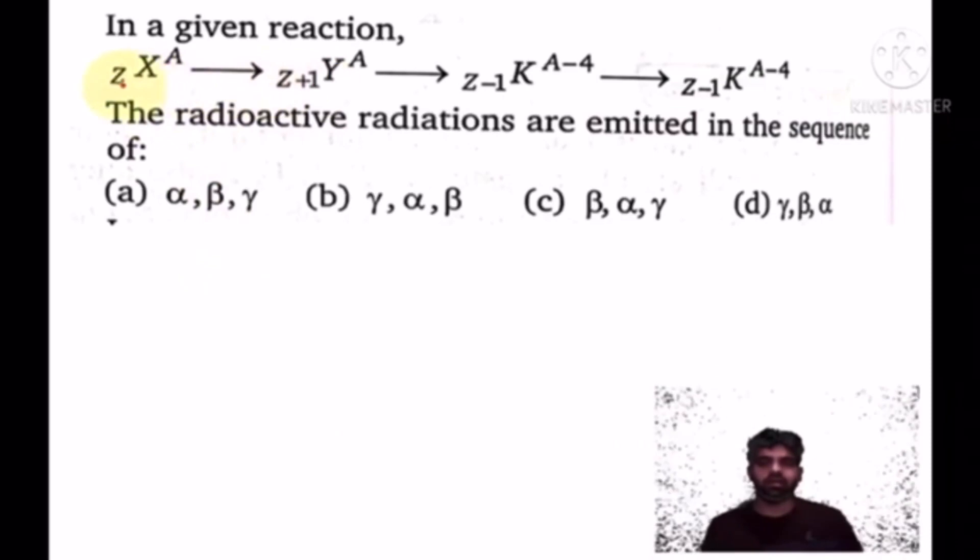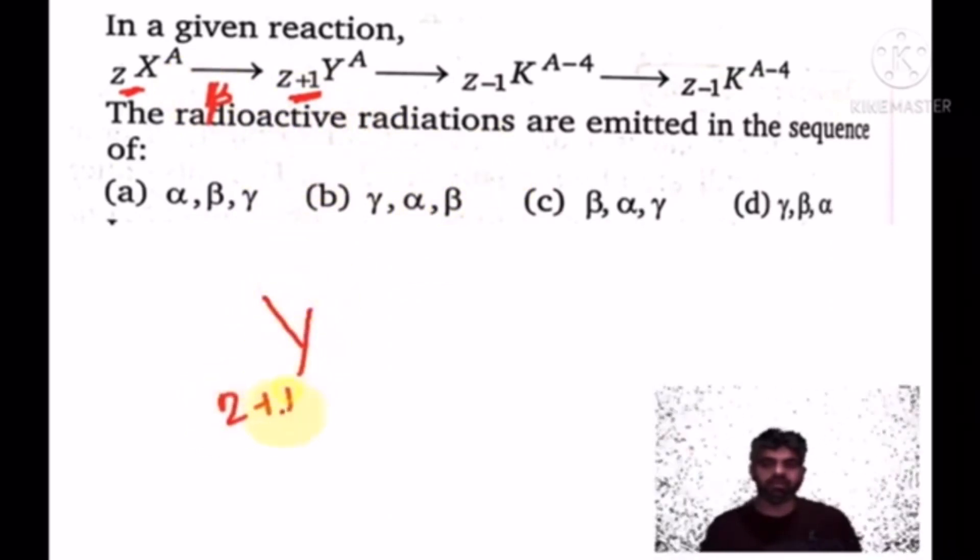What decay occurred? Z → Z+1 with beta decay. Atomic number increases by one, mass number A remains same. When atomic number increases by one and mass number stays same, beta decay happened. First beta decay occurred, going to Z+1, A.